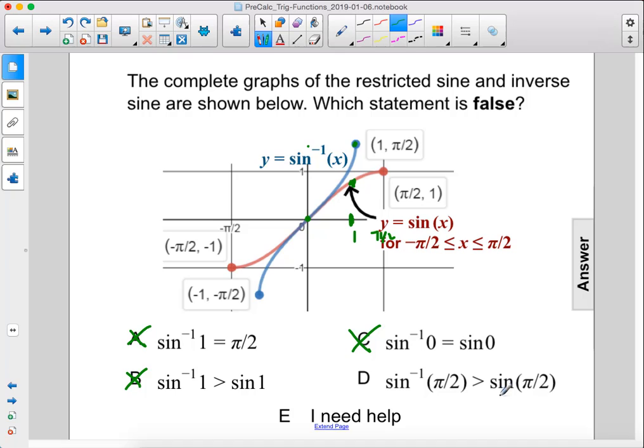Arc sine of pi over 2 is greater than sine of pi over 2. Pi over 2 is this point right here, this line right here. The sine of pi over 2 is 1. However, there is no value for the arc sine of pi over 2. As you can see, there is no blue graph that intersects with this line right here at x equals pi over 2. So this is our false statement.